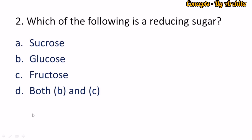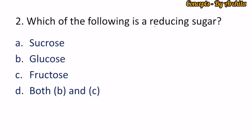Question number 2: which of the following is a reducing sugar? A reducing sugar is one which has a free aldehyde or ketone group present. If you look at glucose and fructose structures, both contain a free aldehyde or ketone group, so both are reducing sugars.